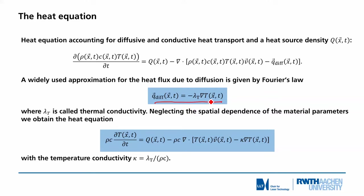So that depends very strongly on the gradient of the temperature. The proportionality factor lambda is called the thermal conductivity, and if we simplify the equation and correlate the thermal conductivity with the temperature conductivity kappa — kappa is just the thermal conductivity divided by density and specific heat — then we get the heat equation as shown here on the bottom of the slide.